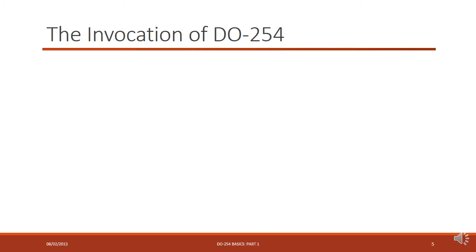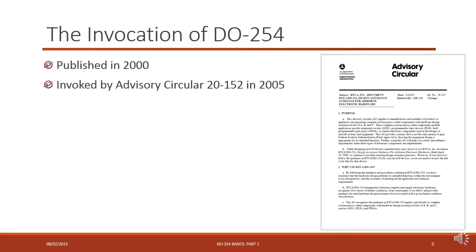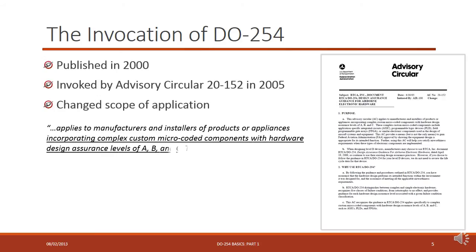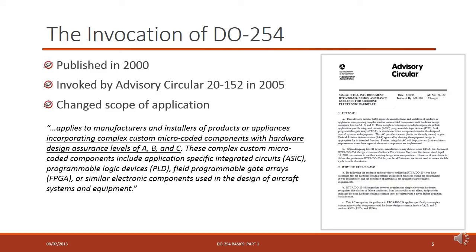Coming back to the scope of DO-254 and how the document was actually invoked into policy: it was published in 2000, and it became policy — invoked as they might say — by Advisory Circular 20-152 in the year 2005, five years after the original publishing. It was invoked in a specific scope of application: DO-254 now applies to manufacturers and installers of products or appliances incorporating complex custom microcoded components with hardware design assurance levels A, B, and C.